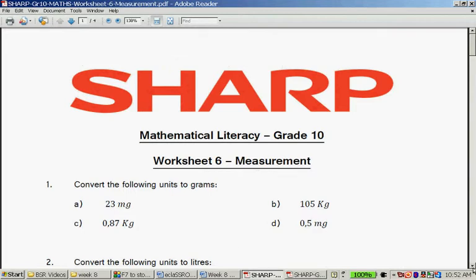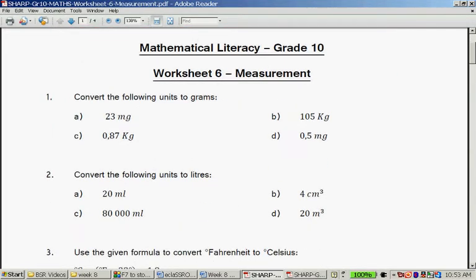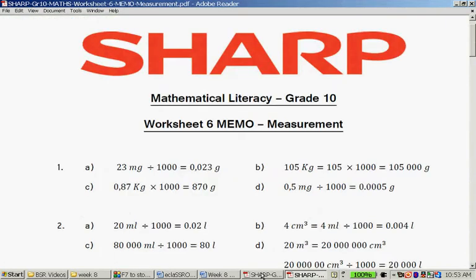Convert the following units to liters. 20 milliliters, 4 cubic centimeters, 80,000 milliliters and 20 cubic meters. Now, 1 cubic centimeter is equal to 1 milliliter. So this is actually 4 milliliters. Let's go to the answers. And this milli still means 1,000. So 20 milliliters divided by 1,000 is 0.02 liters. 4 cubic centimeters is 4 milliliters. If I divide it by 1,000, I get 0.004 liters.